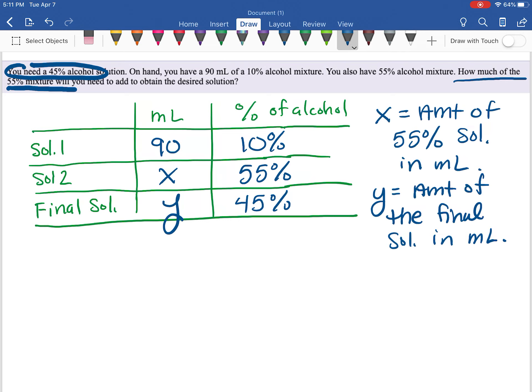All right, so now we can use this information now that we have it organized to create our two equations. We got two unknowns, so we need two equations to solve this.